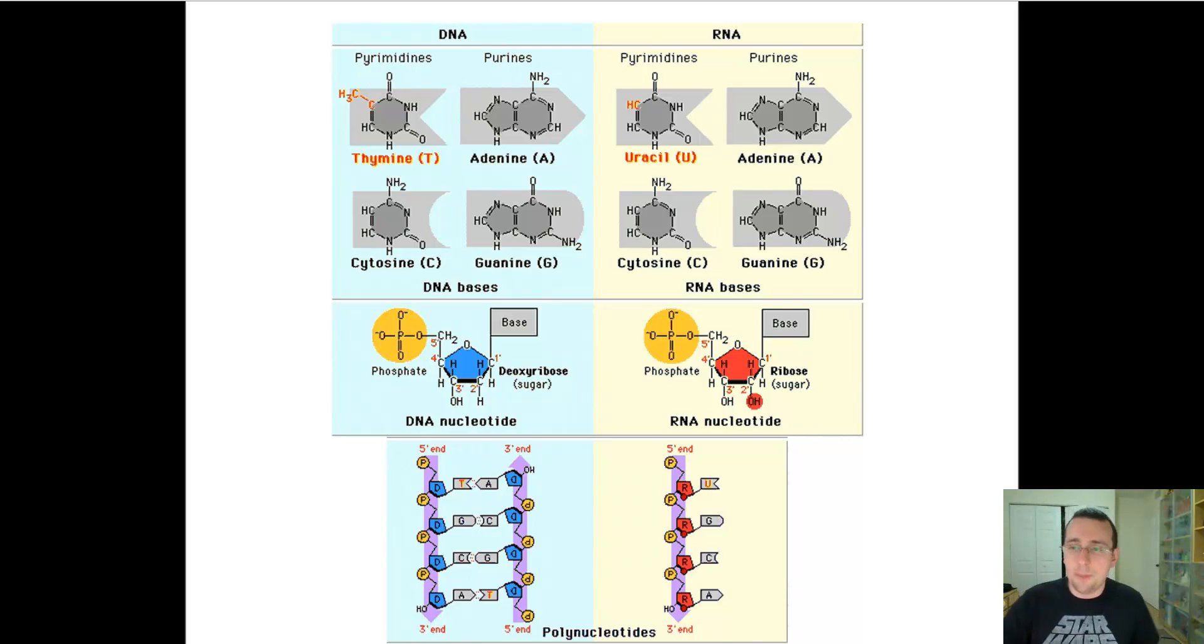RNA has multiple jobs, including picking up amino acids, helping line them up in order, and carrying the message to the cytoplasm. The RNA also has catalysts and structural roles, although some pieces of DNA also have structural roles, namely the centromere and the telomere.